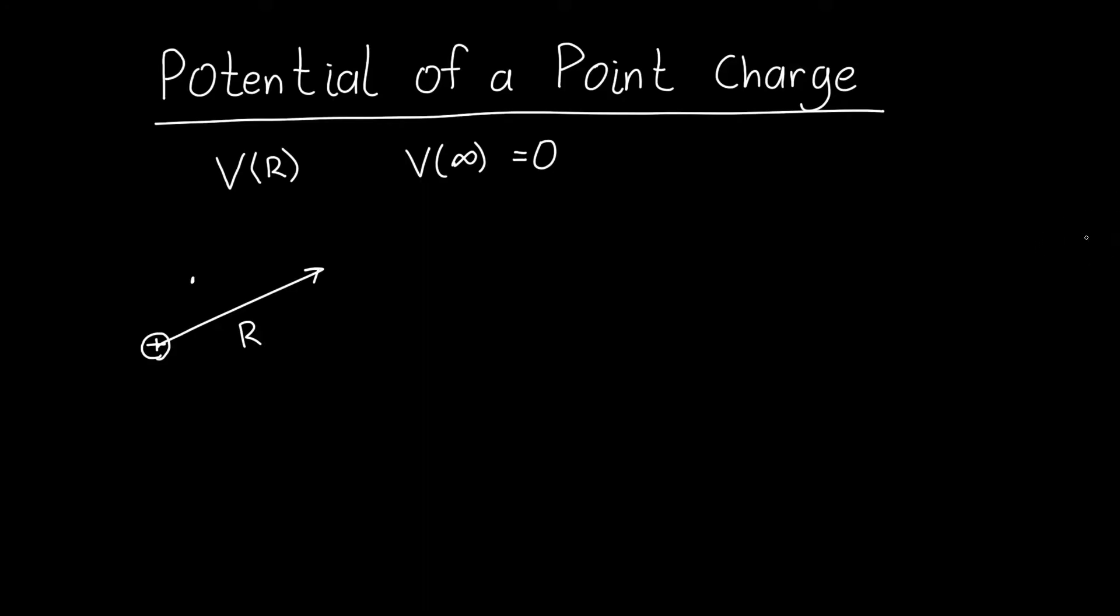So how do we do it? Well we're going to calculate it from the electric field. So we know that the difference in potential between two points is just equal to the negative integral of the electric field dotted with dr.